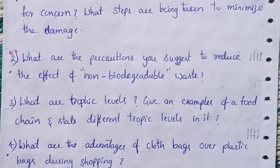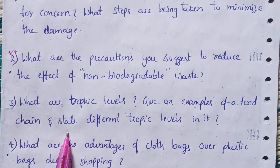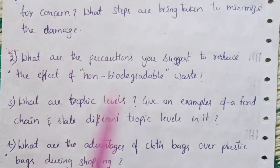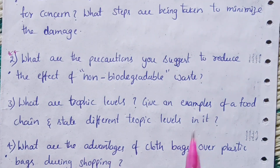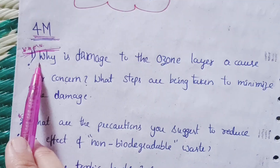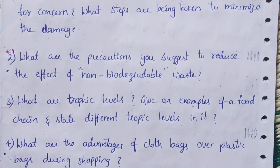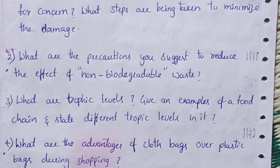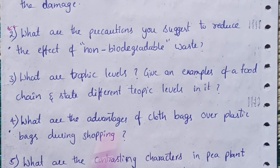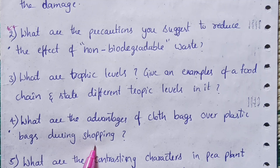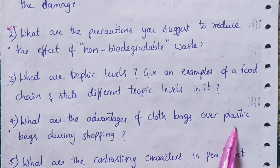The third question is: What are trophic levels? Give an example of a food chain and state the different trophic levels in it. I'll read all the important questions first, then at the end of the video I will tell you which ones to focus on first. The fourth question is: What are the advantages of cloth bags over plastic bags during shopping?